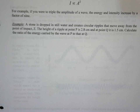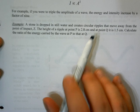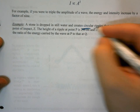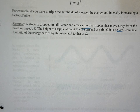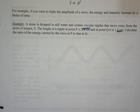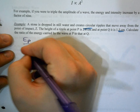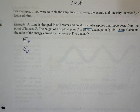A stone is dropped in still water and creates circular ripples that move away from the point of impact. The height of the ripple at point P is 2.8 centimeters, and at Q it's 1.5 centimeters. We want to find the ratio of energy carried by the wave at point P to that at point Q — that is, E_P / E_Q.